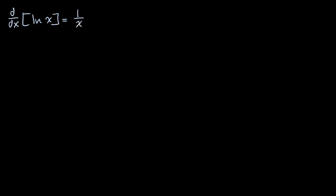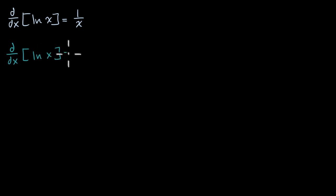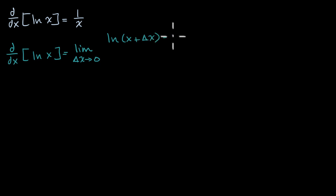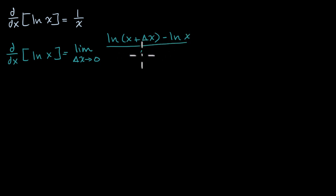Just using the definition of a derivative, if I were to say the derivative with respect to x of natural log of x, that is going to be the limit as delta x approaches zero of the natural log of x plus delta x minus the natural log of x, all of that over delta x.